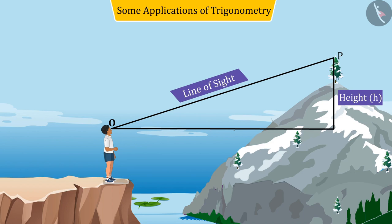So we can say that the point from which the object P is seen is called the point of vision.